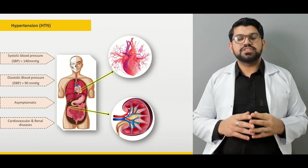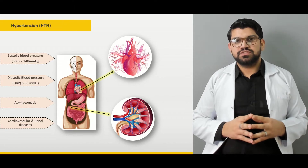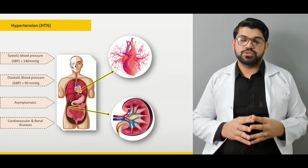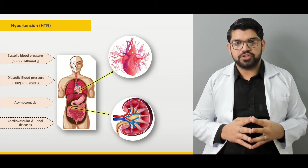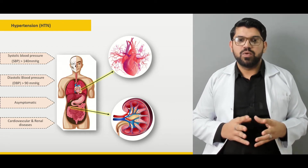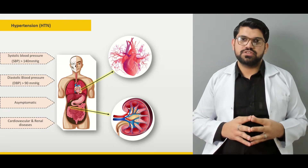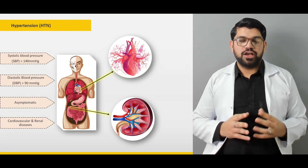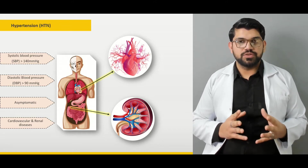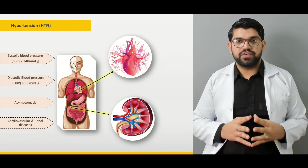First we will define hypertension. What is hypertension? What are the two classifications of hypertension, which includes primary or essential hypertension and secondary hypertension? What do you mean by the term asymptomatic hypertension? And what might be the cause of hypertension, which includes cerebral and renal vascular injuries or vascular diseases?